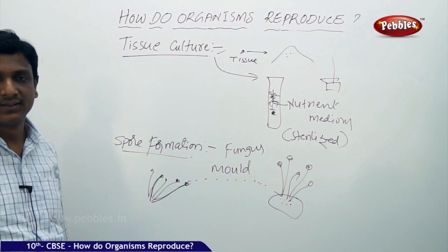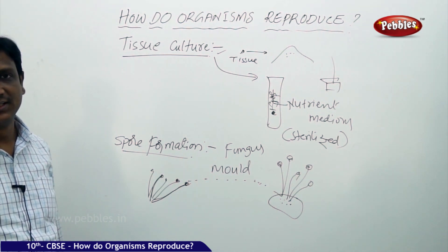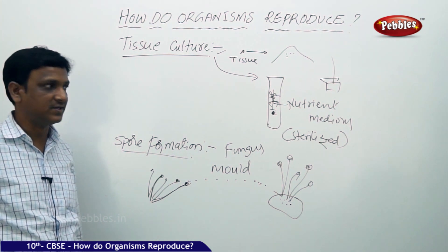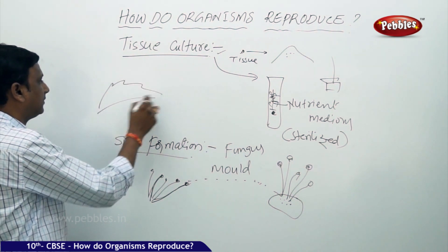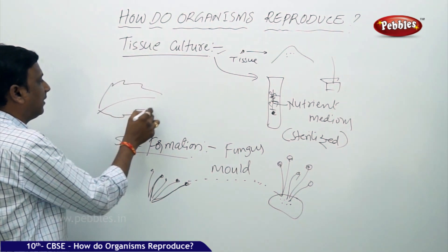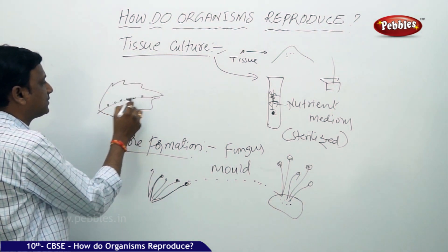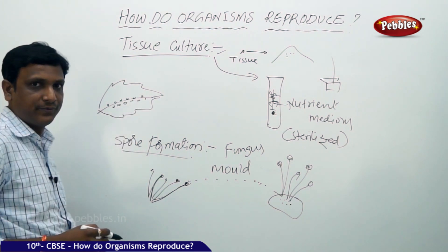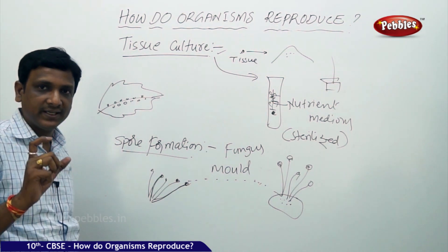An example is Mucor, a kind of fungus in which we observe spore formation. Even in some plants we observe spores — in ferns, for example. If you see the leaf of a fern, on the underside of the leaf you see some kind of spores. These plants reproduce by spores; they do not produce any flowers or seeds — they have only spores.